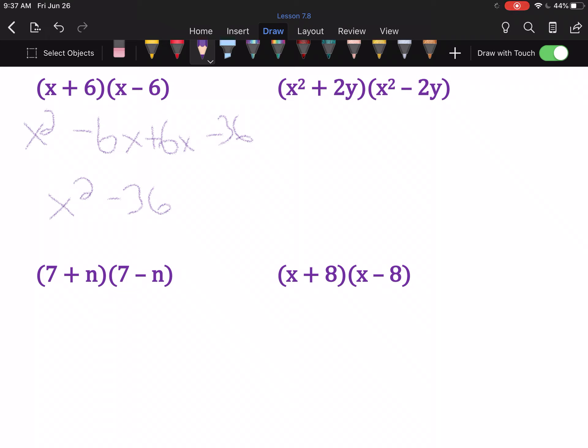So, on this next one, first is x to the fourth. Outer and inner will cancel. Last is -4y².